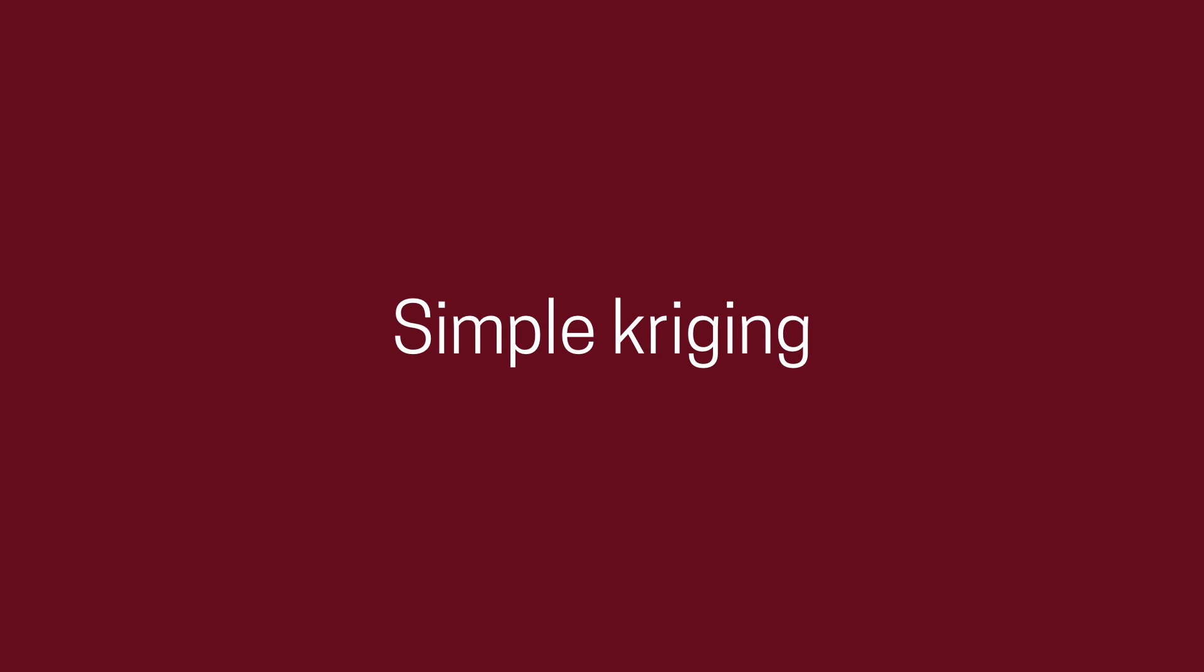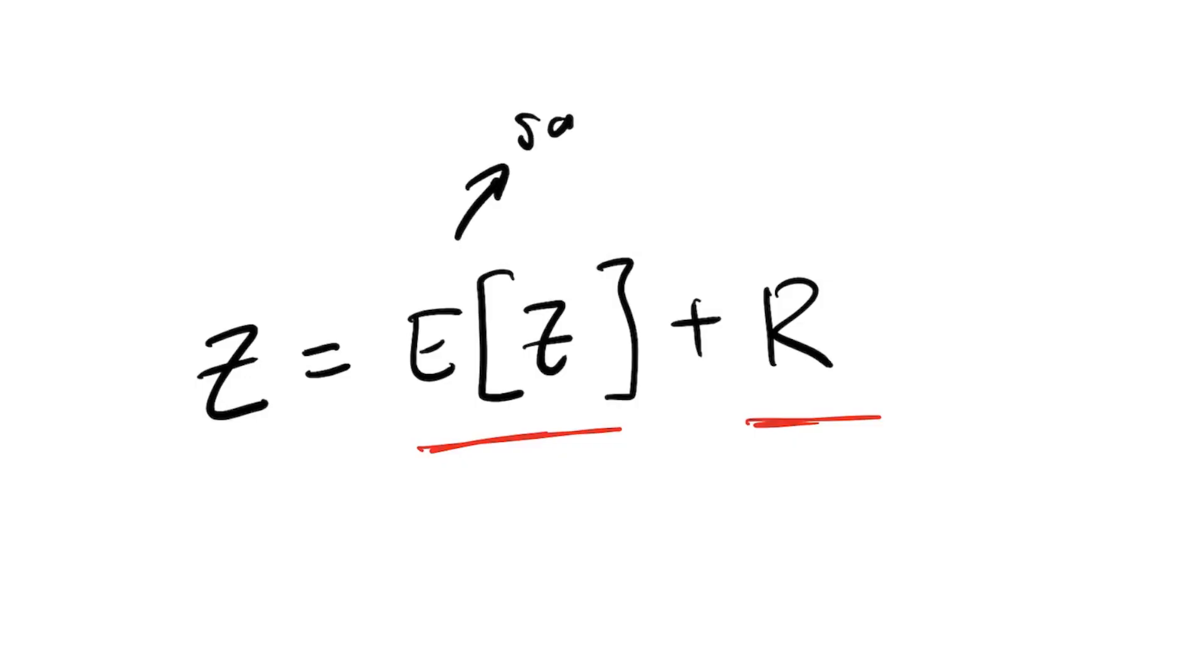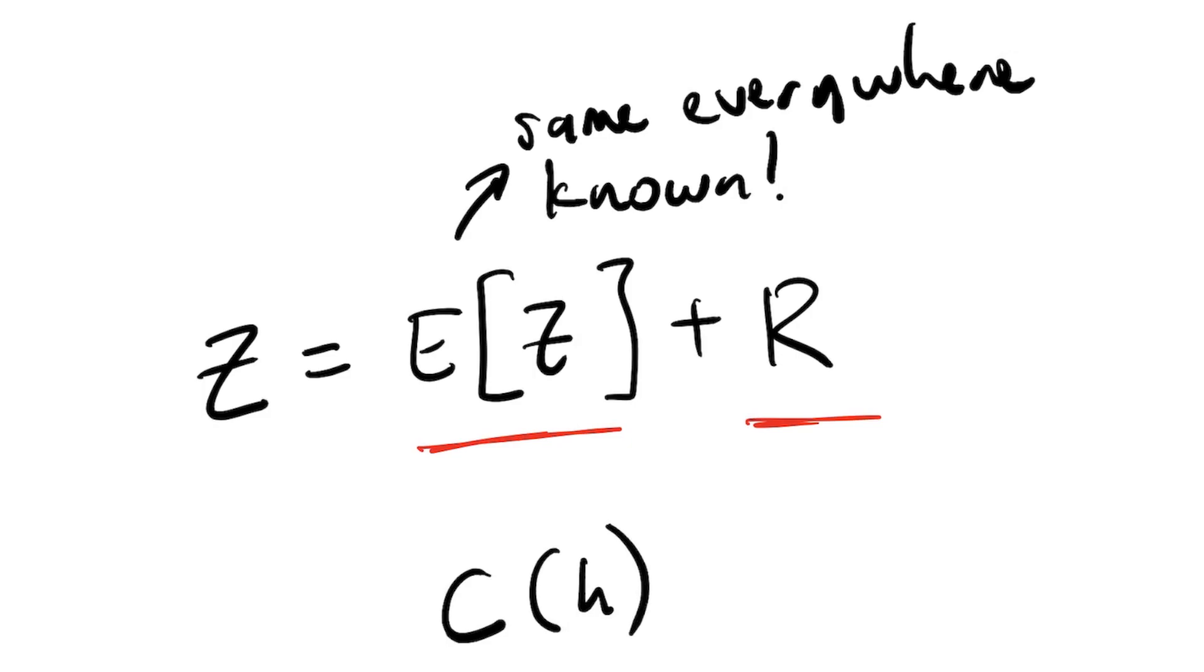In simple kriging, we assume that the expectation is the same everywhere and that it is known. We also assume that the covariance between a random variable at two locations doesn't depend on the locations themselves, but instead can be defined based only on the vector separating them. Like other interpolation methods, simple kriging uses a weighted average. But since we're assuming that the expectation is the same everywhere, we will define this weighted average in the residuals, the second term of the previous equation.